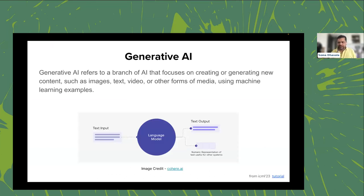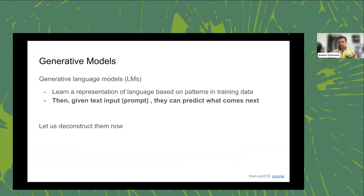Large language models like GPT 3.5 and GPT-4 are doing something that sounds quite simple: you give a text input and you expect a text output. The text input you give to these models is called the prompt, and depending on the kind of instructions in the prompt, the behavior and functionality of these large language models can vary widely.